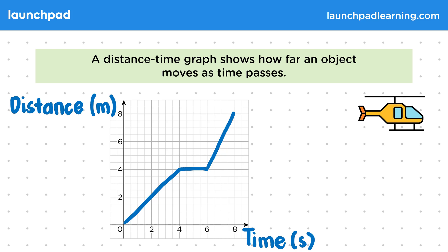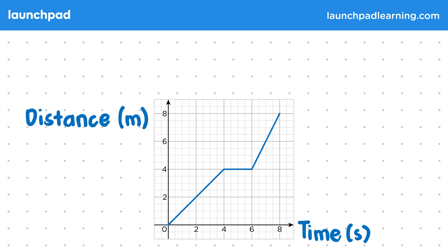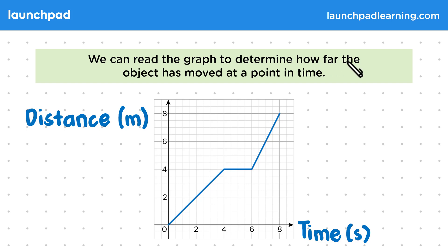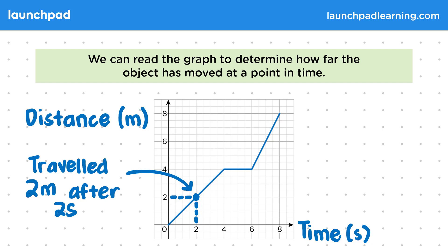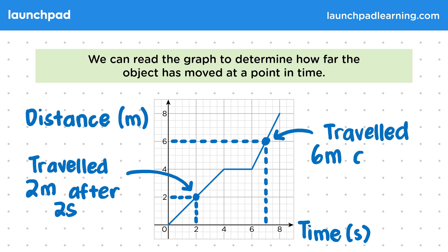So now we have our distance-time graph — but how do we use it and what does it tell us? We can read the graph to determine how far the object has moved at a point in time. When we read a graph, we're looking at the x and y values at a point on the graph. For distance-time graphs, the y value tells us the distance travelled and the x value tells us the time taken. So in this example, we can see that the helicopter had travelled 2 metres after 2 seconds, and from a second point, 6 metres after 7 seconds.